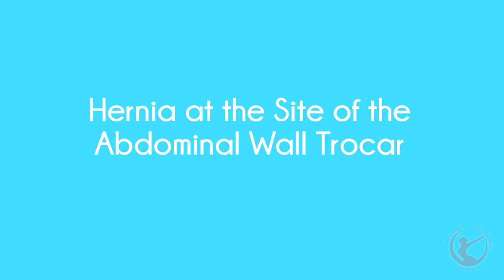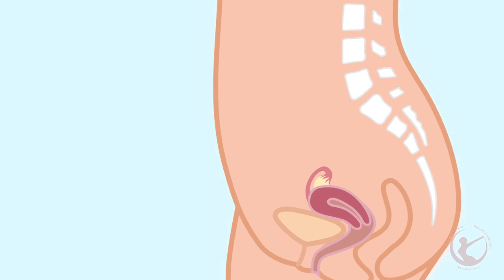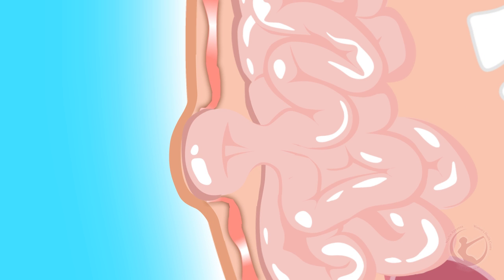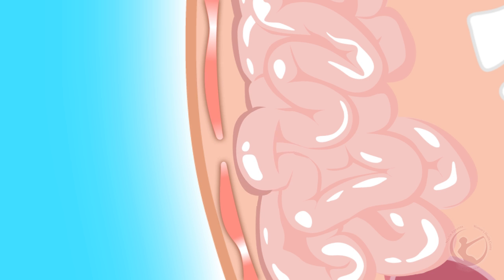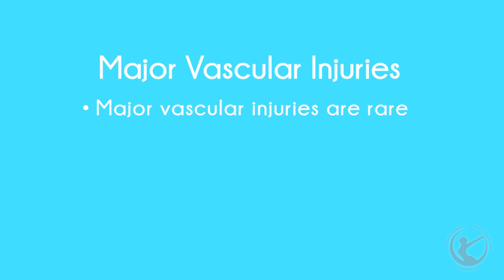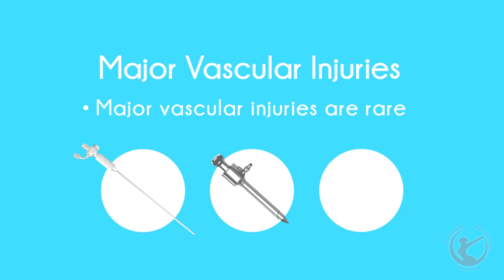Hernia at the site of the abdominal wall trocar. A hernia occurs when the abdominal contents push out through the small incisions within the abdomen. They rarely occur in incisions up to one centimeter in diameter. All incisions more than one centimeter in diameter are sutured in the deeper layers to prevent this occurring. Delay in diagnosis can have major consequences. Major vascular injuries are rare and may be related to the Veress needle, trocar or energy source.